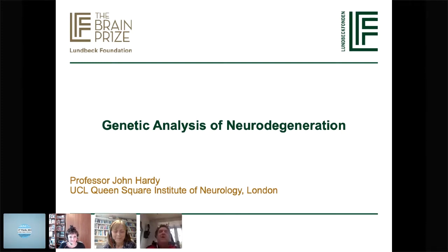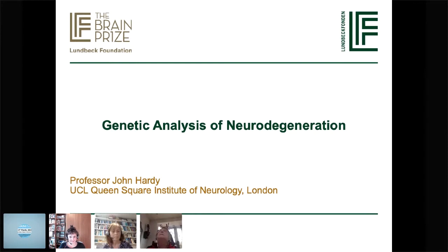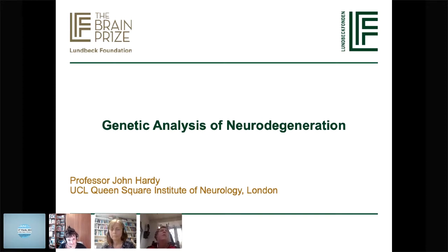So what I'm going to do is talk mainly about Alzheimer's disease. But let me just say what the history of genetics in general is. We started, I'm going to say in the 90s till about 2005, with positional cloning — identifying one gene at a time by positional cloning.